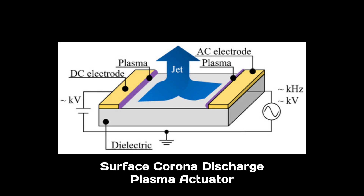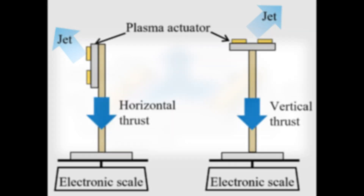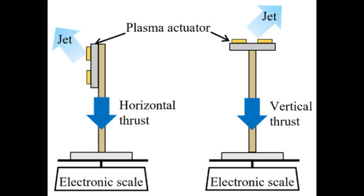A surface corona discharge actuator consists of two facing electrodes. A high DC voltage is applied to one electrode, and the other electrode is typically grounded. When the electrodes are plates, corona discharges occur at both electrodes, inducing a deflected jet.